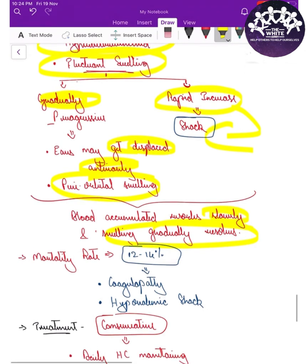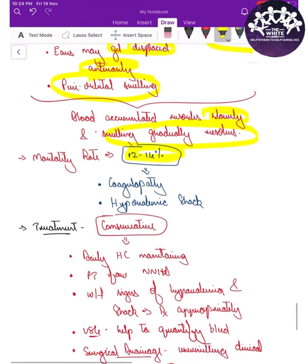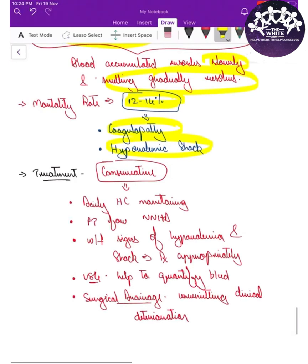Due to a huge amount of blood loss, the child can go into shock and hypotension if not monitored properly. The mortality rate is as high as 12–14%, mainly because of coagulopathy and hypovolemic shock.